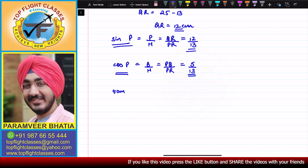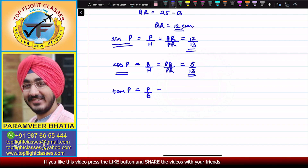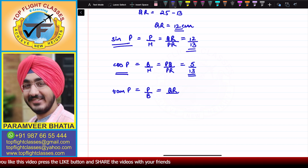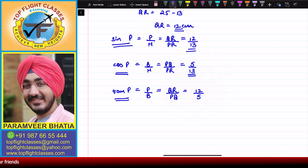For tan P, it is perpendicular over base. The perpendicular is QR and the base is PQ. QR equals 12 and PQ equals 5, so tan P equals 12 over 5.